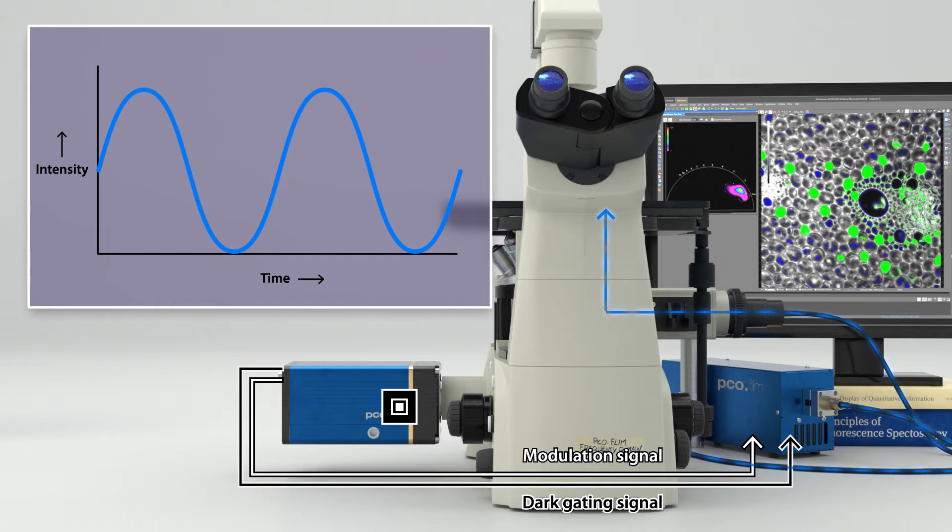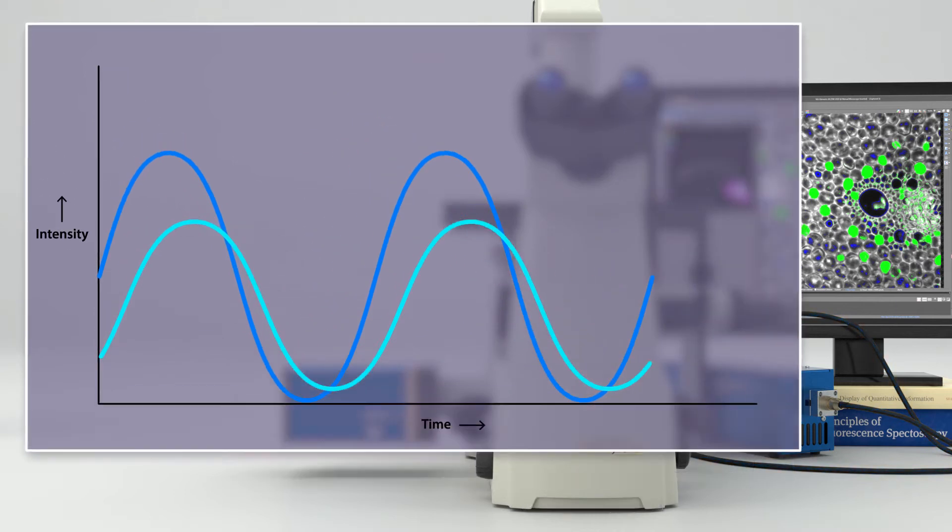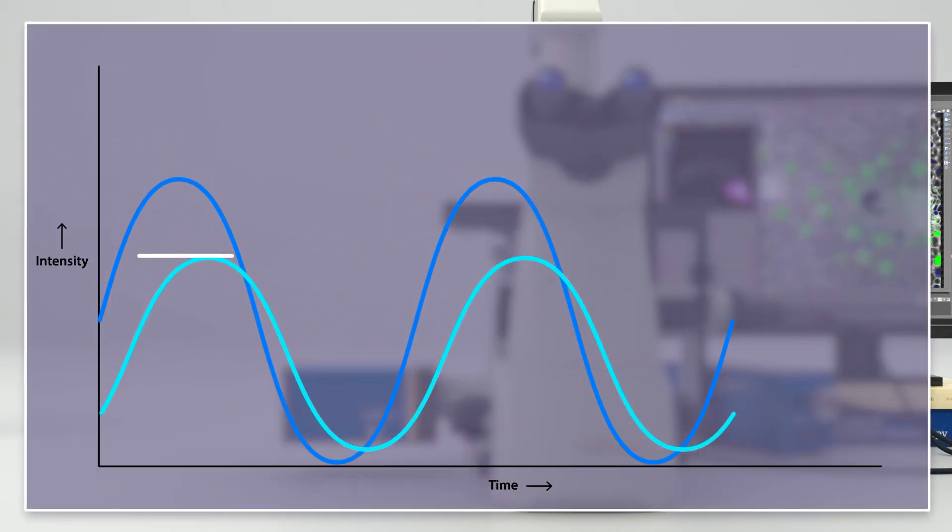Using a sinusoidal excitation waveform, the emission waveform is also a sinusoid with the same frequency. It is delayed in time and shows a decreased amplitude, a decreased constant component, and a decreased modulation depth. By comparison of the excitation and emission sinusoids, the time or phase shift can be determined.